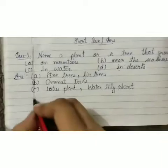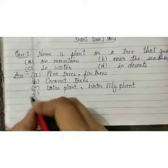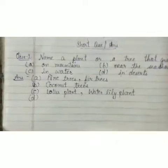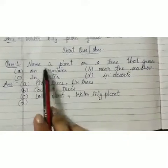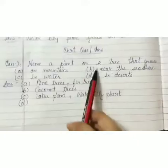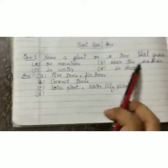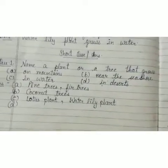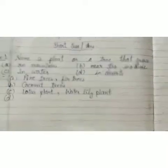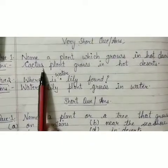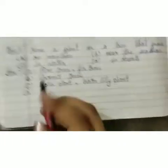And then D option: name a plant or tree that grows in deserts. A plant or tree which grows in deserts. We have already done this in the first question — the same plant which grows in hot deserts, and it is again cactus.